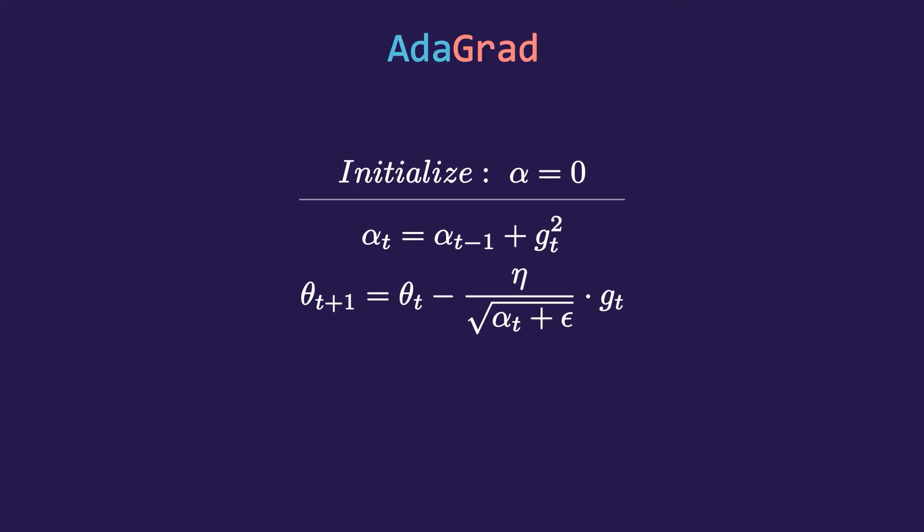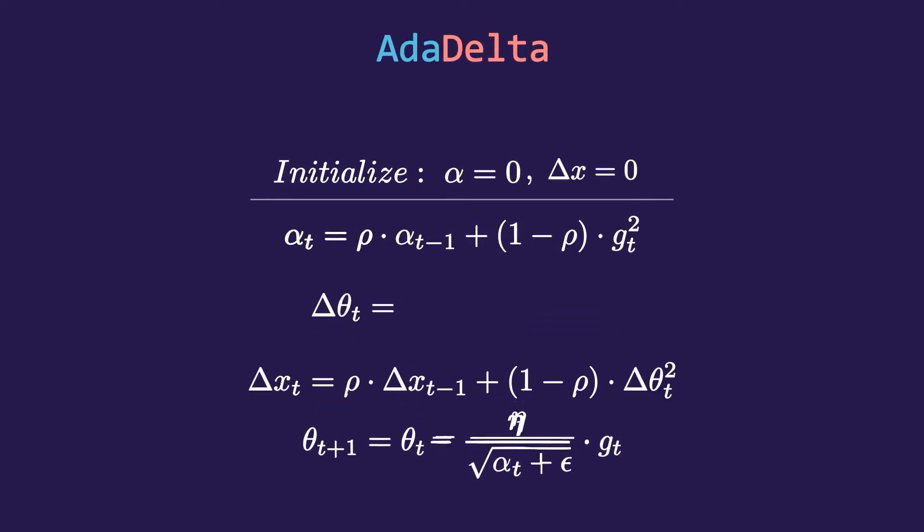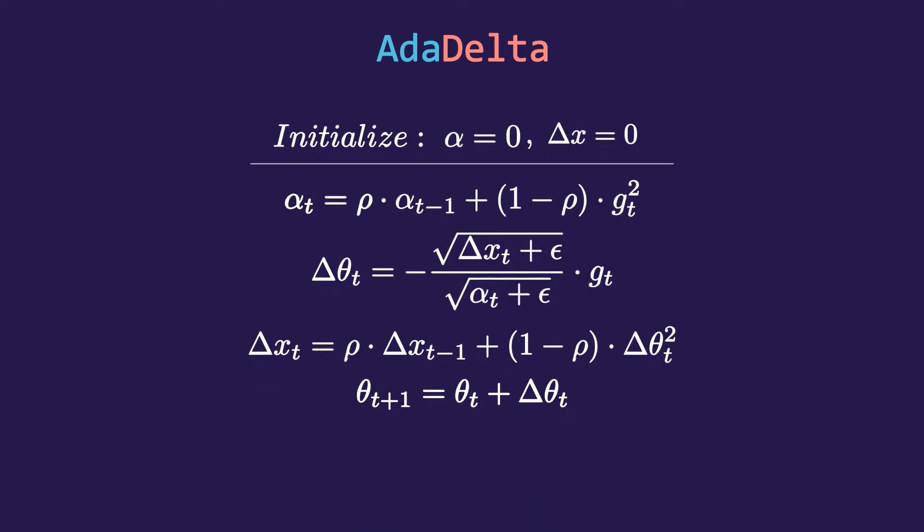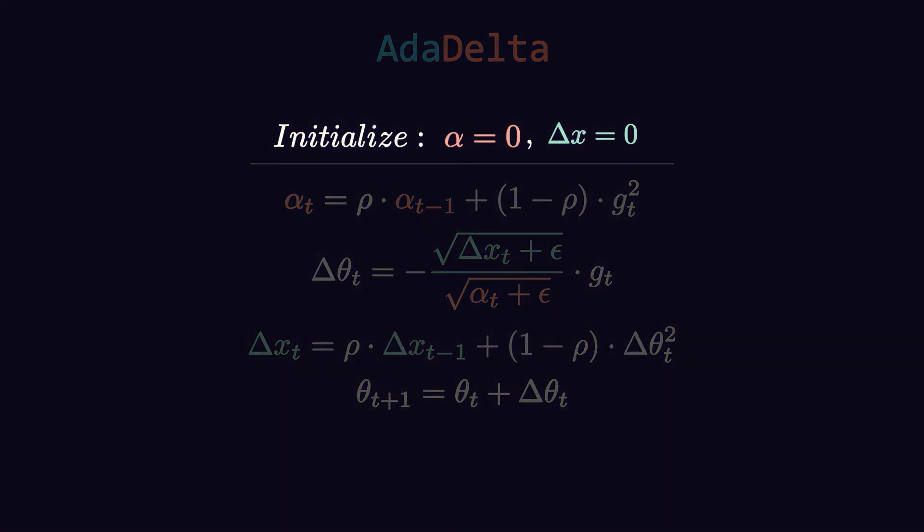Let's see how. I know there's too much on the screen, but let's understand this step-wise. Instead of just alpha, now we are also initializing delta_x as zero. Delta_x is the accumulated update. This is used to calculate the learning rate so we don't have to choose it. After this, we will update the alpha term. Unlike AdaGrad, there is one more term in this equation known as rho. This is used for our infinitely increasing alpha value.